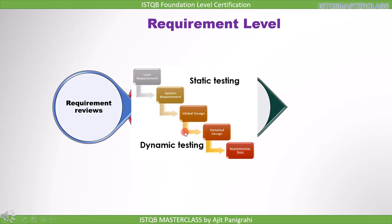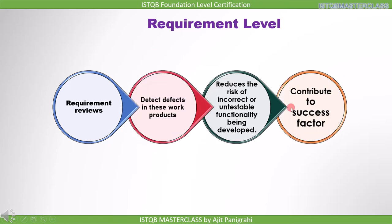These are the different levels in software development. First you have the user requirement, then the system requirement. If we don't correct the error at this level, it goes on and becomes part of the global design and detailed design — both of which will be wrong. And eventually we will have software that does not work correctly. So if we correct the requirement at this stage, the rest of the process will carry out without error. This is why we say testing at the requirement level contributes to the success of the product.